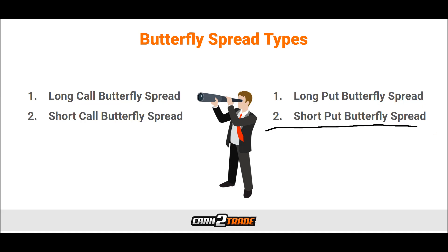Then we have the short put butterfly spread — a means of benefiting from significant volatility in the market. This system is made of writing one out-of-the-money put option, purchasing two at-the-money puts, and then writing an in-the-money put option. We would maximize profits if the asset value was above the highest option price or below the lowest option price on expiry. The worst case scenario would be if the price didn't move at all, making the at-the-money put options worthless. The maximum downside would be the difference between the higher and middle strike prices, less the written option income. There is a net credit when setting up the short butterfly spread, but we want that market to move.